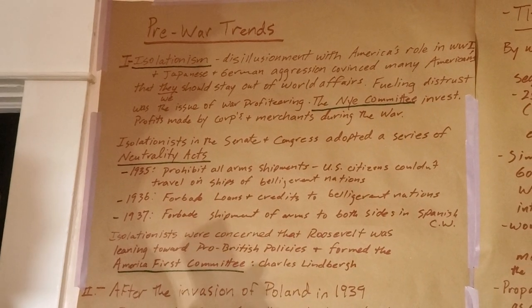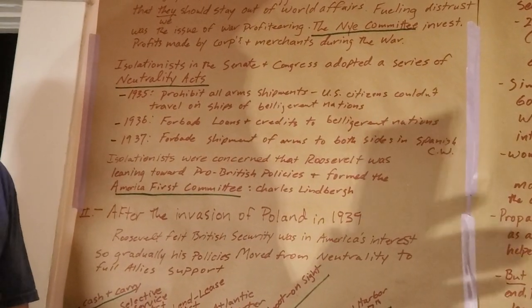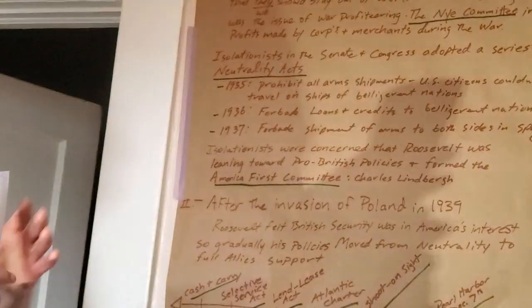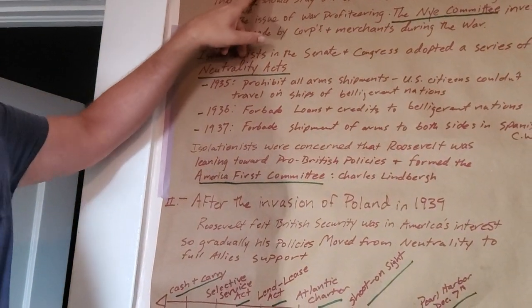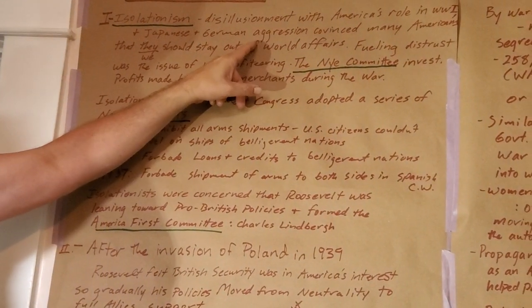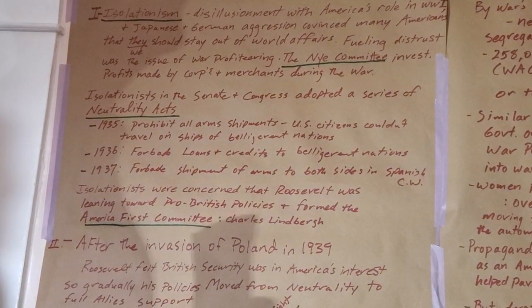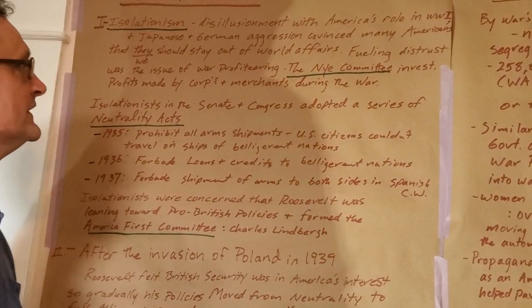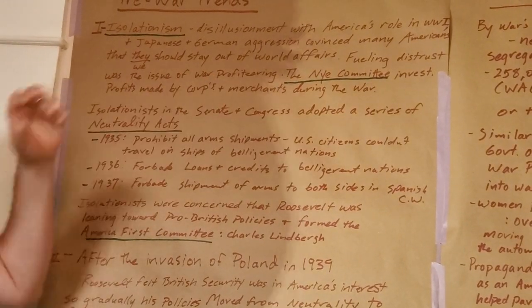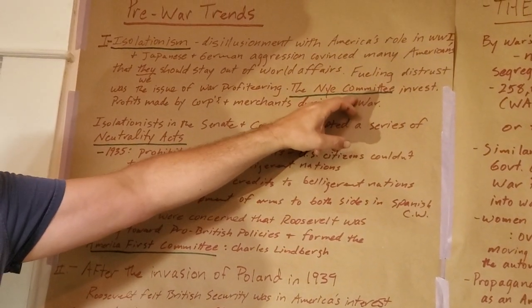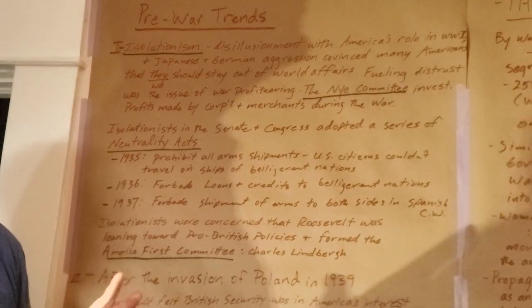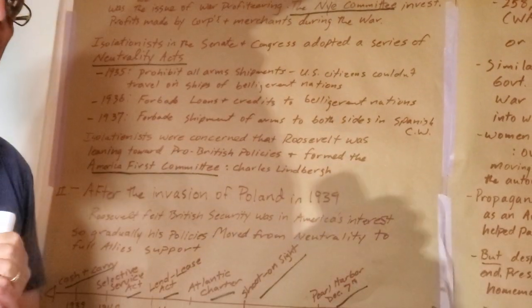It wasn't just among ordinary citizens — there were people in Congress who were hardcore isolationists. At this point in the early 30s they hadn't quite realized what Hitler was up to or the evils of Nazism, so to them this was just a matter of staying out of European affairs. They were disillusioned with America's role in World War I and also not happy about Japanese or German aggression. Fueling the distrust was the war profiteering claims put through the Nye Committee, an investigative committee in Congress that determined World War I had been sort of a scheme to make corporations profits.